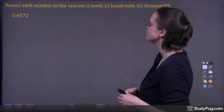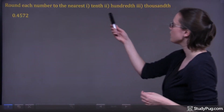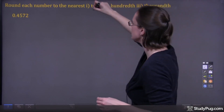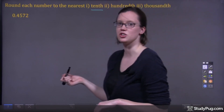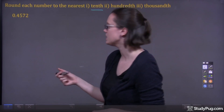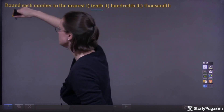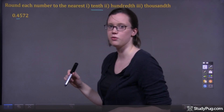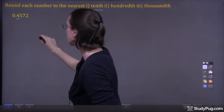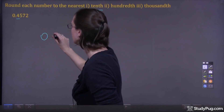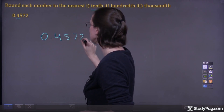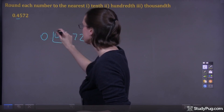Alright, we're going to round this number to the nearest tenth, hundredth, and thousandth. Let's first round to the nearest tenth. So our tenth position is one digit to the right of our decimal point — that's the four that comes right after the decimal. So when we're rounding, what I like to do is put a box around the digit we're rounding.